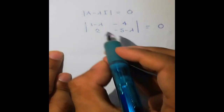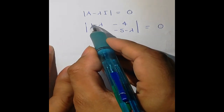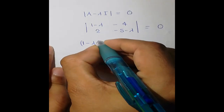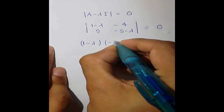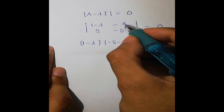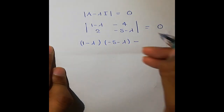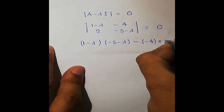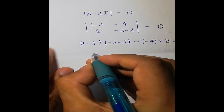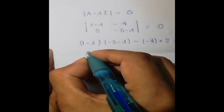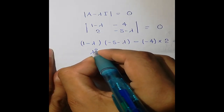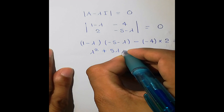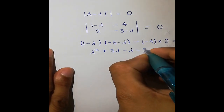Now let's solve the determinant. We compute (1-λ)(−5−λ) minus (−4)(2), expanding the diagonal products and subtracting the off-diagonal product, all set equal to 0.